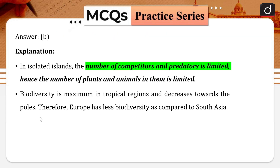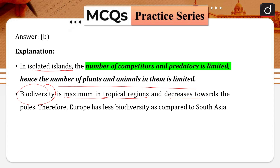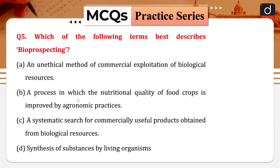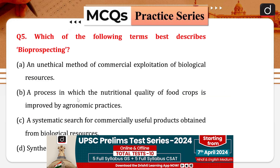The number of competitors and predators is limited in isolated islands, so the number of plants and animals is also limited. Biodiversity is maximum along tropical regions and decreases towards the poles, hence Europe has less diversity than South Asia.